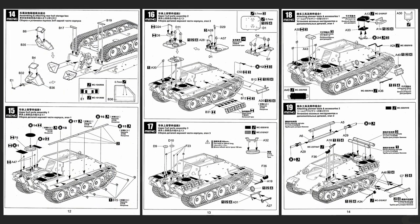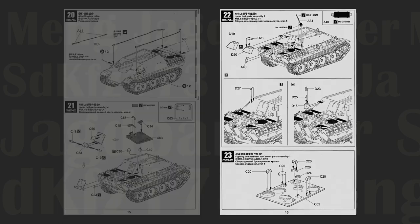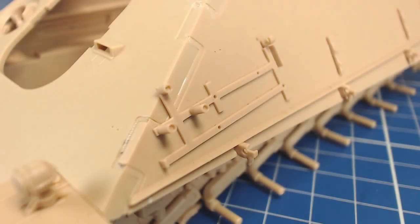Many steps in the instructions have us attaching dozens of detailed parts. These are mostly grab handles, tools, bins, various hooks, mounting brackets, and other doodads. This is also where we find out if our hole drilling was done accurately.